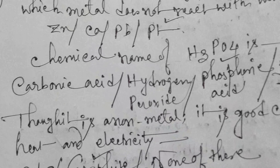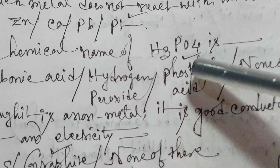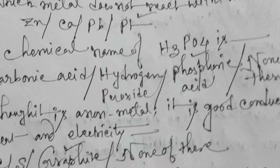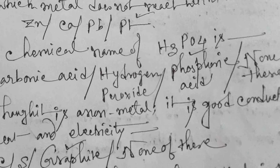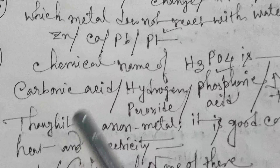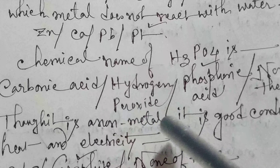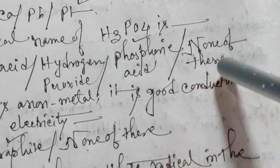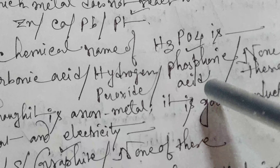Next: the chemical name of H2PO4 — what do we normally call it by its chemical name? Options are carbonic acid, hydrogen peroxide, phosphoric acid, or none of these. The answer is phosphoric acid.